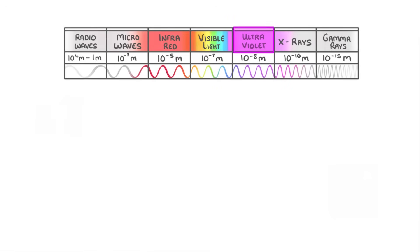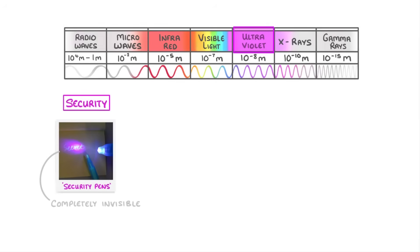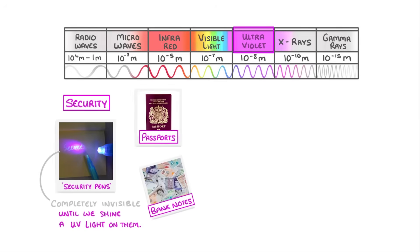Another use of UV radiation is in security. By using special security pens, we can mark property and write codes that are completely invisible until we shine ultraviolet light on them. We do the same thing with passports and banknotes, which makes them harder to copy and means we can detect forgeries more easily.